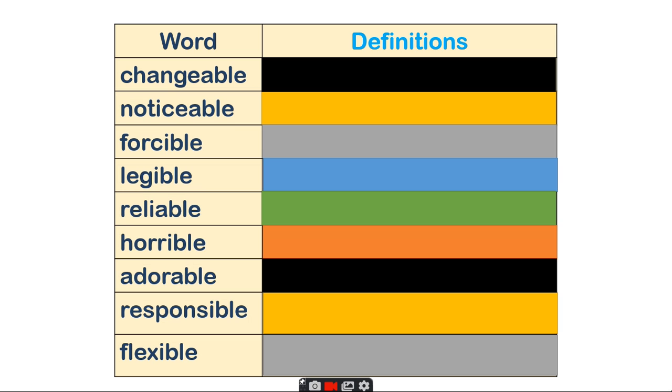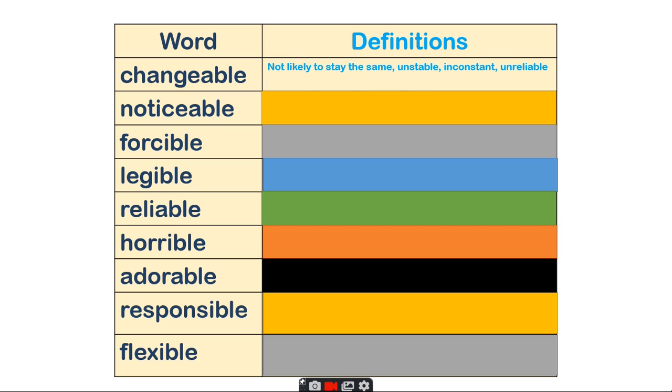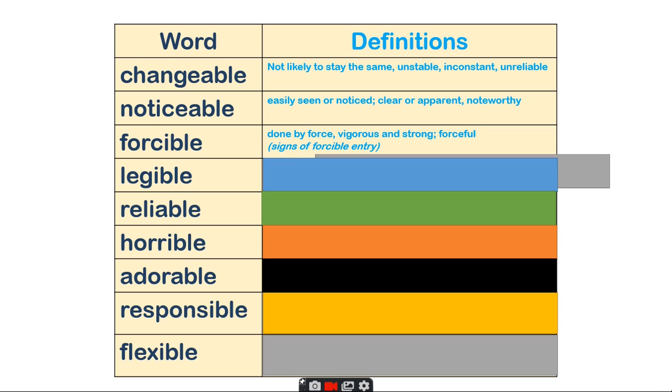Let's see if you got the definitions right. Changeable - something that's not likely to stay the same, unstable, inconsistent, unreliable. Noticeable - easily seen or noticed, clear or apparent, noteworthy. Forcible - something that is done by force, vigorous and strong or forceful.